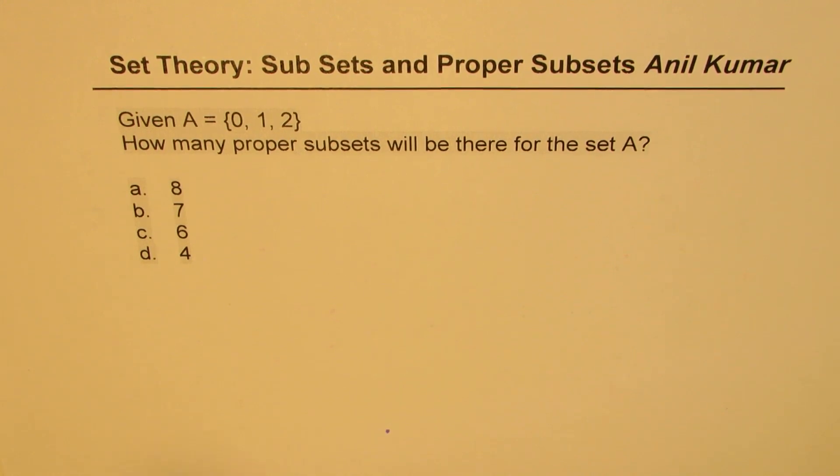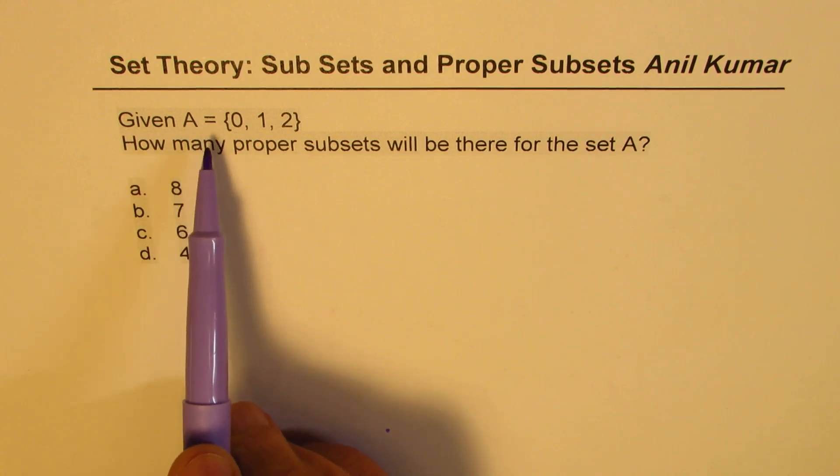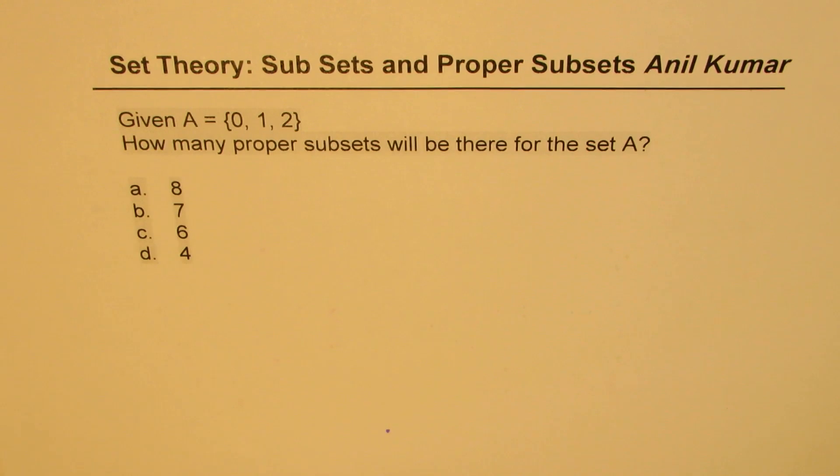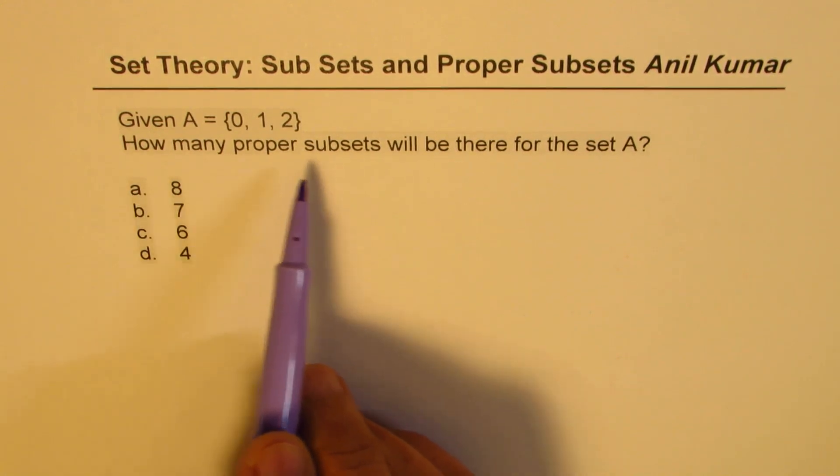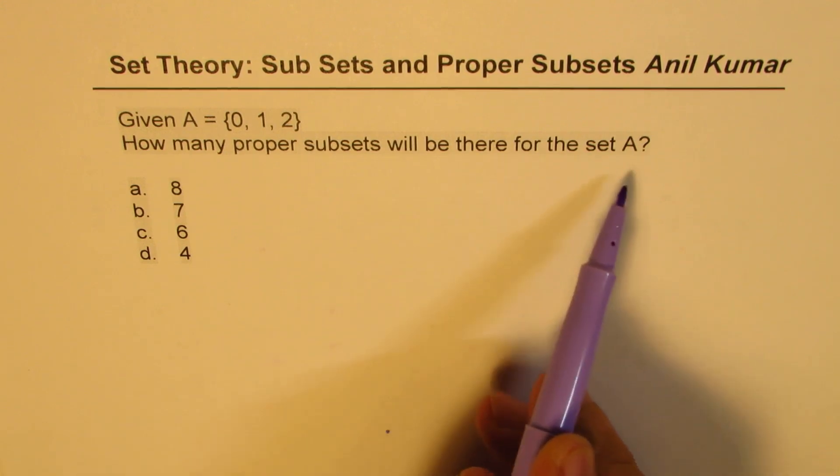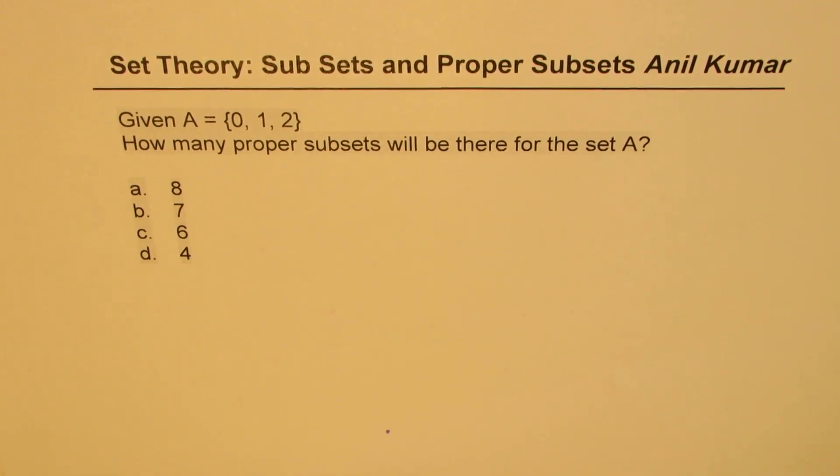The question here is: given A equals to a set of 0, 1 and 2, these three are the elements of set A. How many proper subsets will be there for the set A? That is what you need to answer. Four choices are given to you.